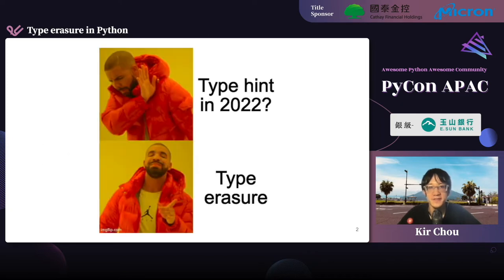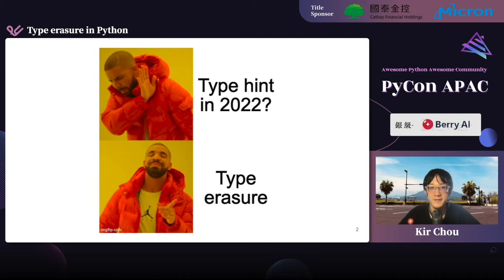If this is not your first Python conference, type hint may be something you've heard before. It is a hot topic for Python these years, and even in 2022 it's still a hot topic. There are tons of syntax and performance improvements in newer Python versions. But today my focus is a different topic — a counter thing called Type Erasure. One motivation behind this is that type erasure is popular in other programming languages, but it's rarely discussed in the Python community.